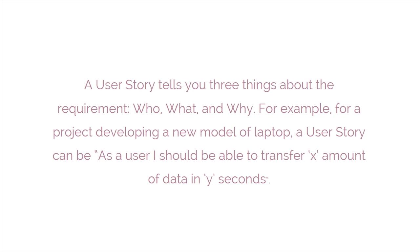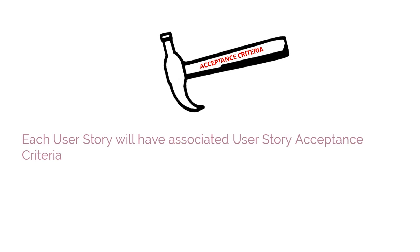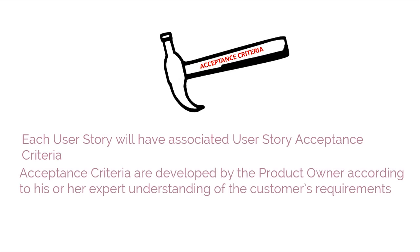A user story tells you three things about the requirement: who, what, and why. For example, for a project developing a new model of laptop, a user story can be: as a user I should be able to transfer X amount of data in Y seconds. User stories are subjective, hence each user story will have associated user story acceptance criteria, which are developed by the product owner according to his or her understanding of the customer's requirements.